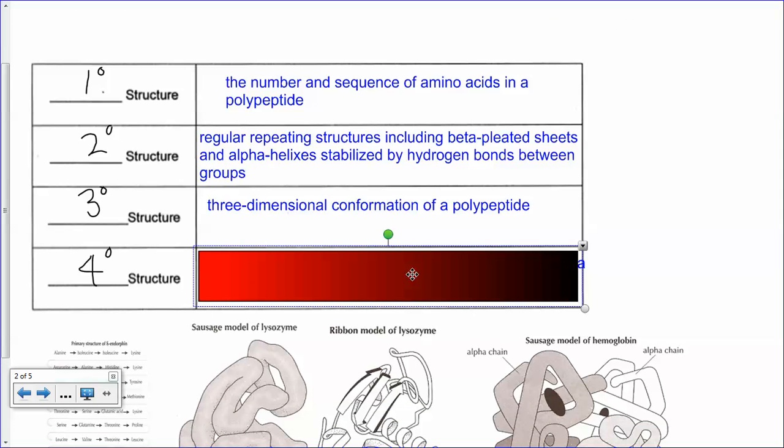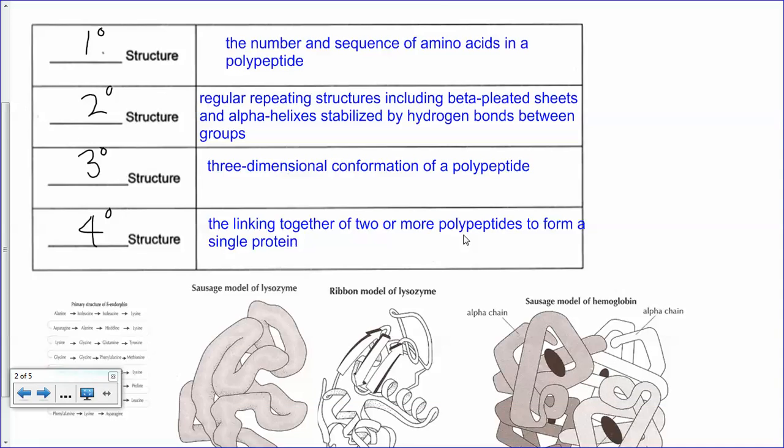The quaternary structure is when you have more than one of these polypeptides actually joining together. Hemoglobin would be an example of that.